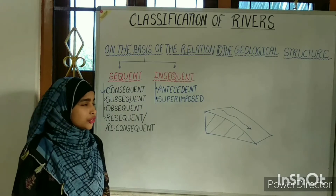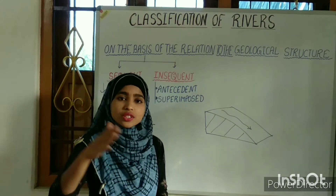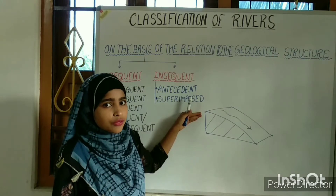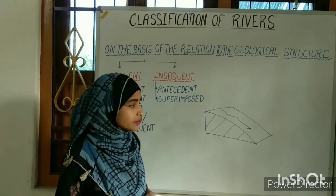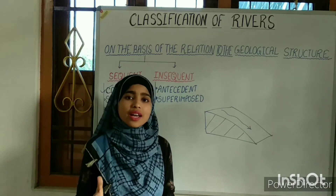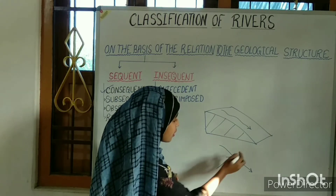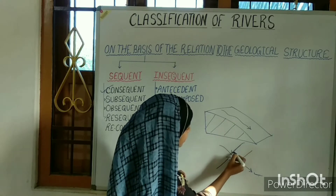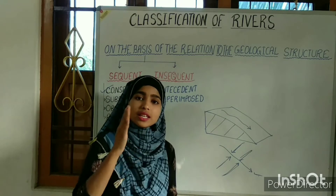Now the second type is the subsequent river. Subsequent rivers are those rivers which originate just after the consequent stream — that is, after the first river is initiated on a newly emerged surface. The subsequent river always joins the master consequent or the consequent river almost at a right angle — approximately 90 degrees. So that is the consequent river and the subsequent river joins the master consequent much later, almost at 90 degrees.